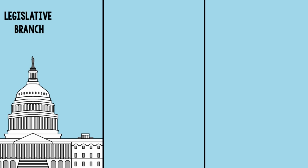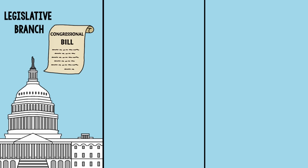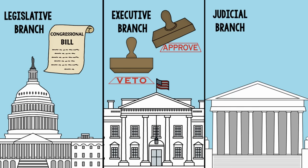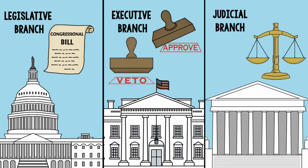For example, Congress has the power to make laws, but the President can approve or veto them. Meanwhile, the Supreme Court has the power to declare those laws unconstitutional if they violate the U.S. Constitution.